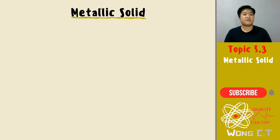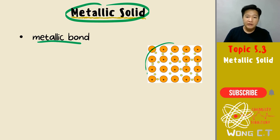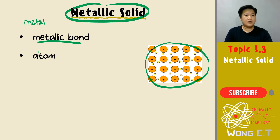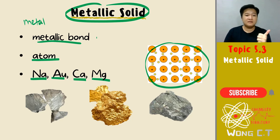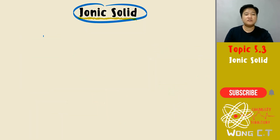First and foremost, let's look at your metallic solid. Metallic solid has metallic bond — remember your electron sea model in metallic bond. Obviously metallic bond is between metals, and the particles are atoms. Examples of metals: sodium, gold (aurum), calcium, magnesium. Make sure you know the type of bonding, the type of particles, and a few examples for metallic solid.